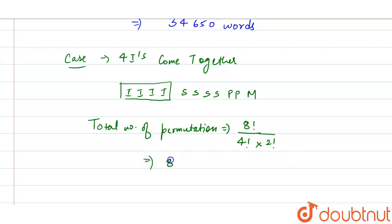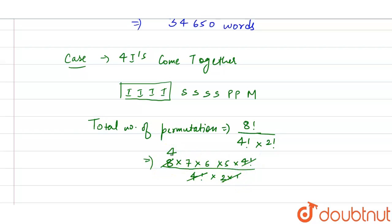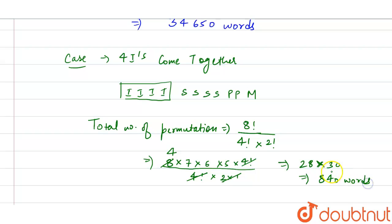Solving: 8! = 8 × 7 × 6 × 5 × 4!. The 4! cancels, and 2! = 2 × 1, so 8÷2 = 4. This gives 4 × 7 × 6 × 5 = 28 × 30 = 840. So the number of arrangements where the four I's come together is 840.